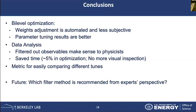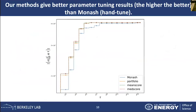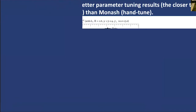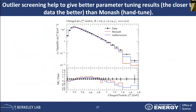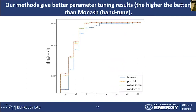Question: In the conclusion you talked about a metric to compare different results — on the previous slide you were still comparing two curves. Do you have one number that summarizes being close to that line? Answer: We can basically plot the same thing like the earlier figure. We have similar results — by using outlier screening, our results are better than the Monash tuning.